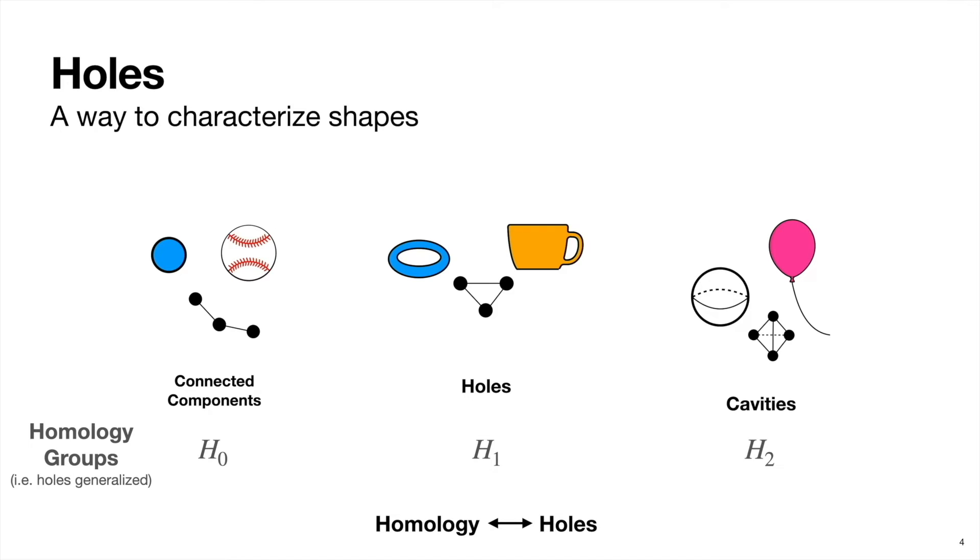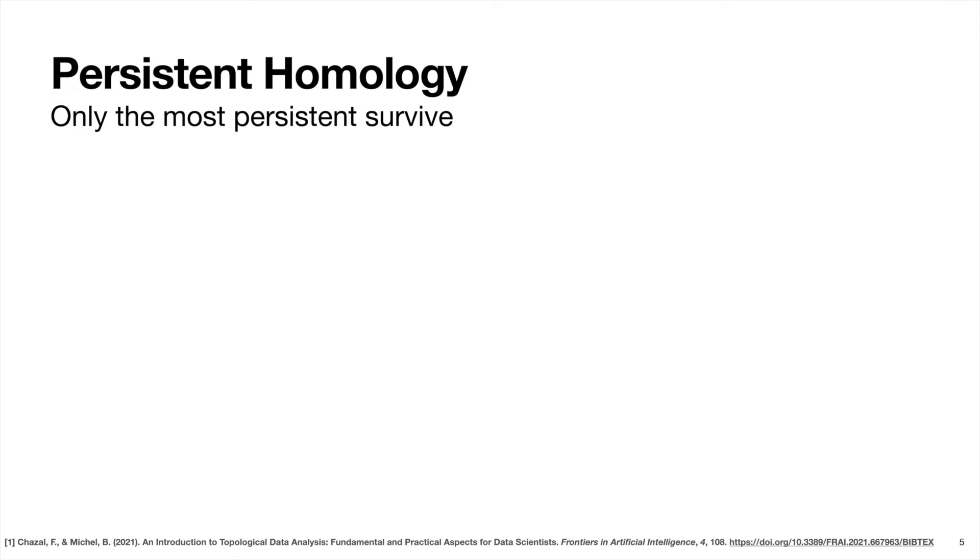Okay, so now that we've talked about constructing shapes with the generalized triangles and characterizing those shapes via generalized holes, we can finally talk about persistent homology. And the first step in persistent homology is to convert data into a simplicial complex.